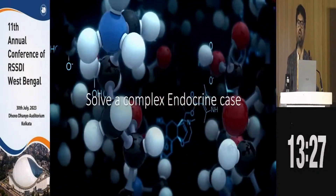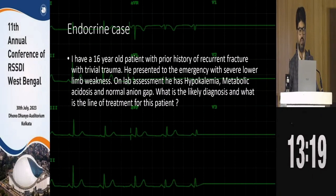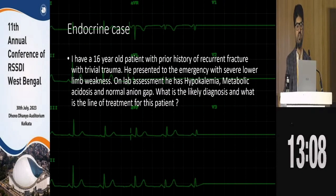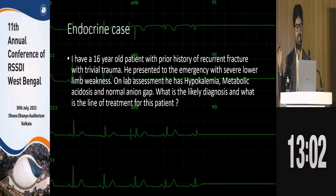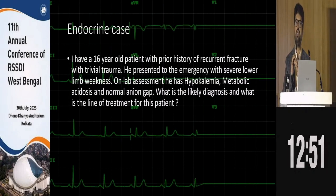Let's solve a complex endocrine case using AI. I'll tell you the step-by-step process. This is a real patient: a 16-year-old who presented with a prior history of recurrent fractures with trivial trauma. He presented to emergency with severe lower limb weakness, and on lab assessment had hypokalemia, metabolic acidosis, and normal anion gap.